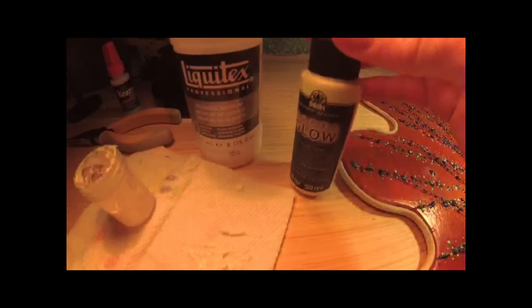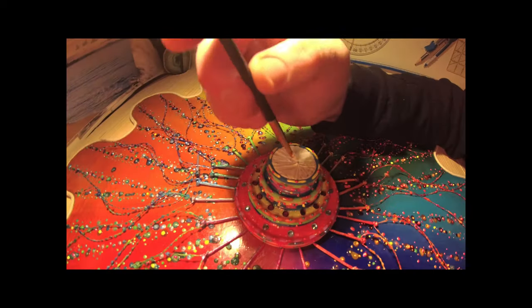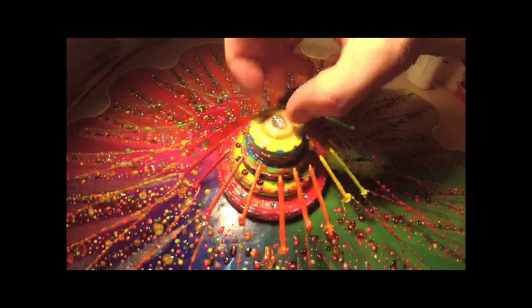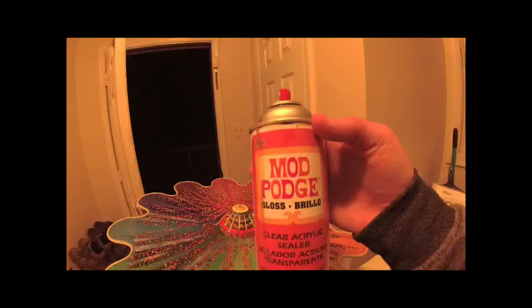Almost finished now and adding glow in the dark paint to the center which I'll add a fluorescent glitter to on top of the gem like bead that kind of reflects the surrounding colors. All that was left was adding the clear sealer to give it an extra shine and a long life and I was finally done.